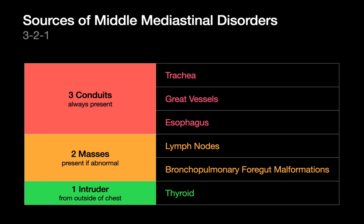Middle mediastinal disorders can arise from six sources. Three are major conduit systems: the trachea, the great vessels, and the esophagus. Two are not visible unless they're abnormally enlarged — lymph nodes and bronchopulmonary foregut malformations — and one is an intruder from the neck, the thyroid. Since we discussed the trachea in our large airways disorders talk, this talk will have five instead of six sections, starting with the great vessels.